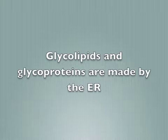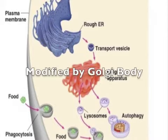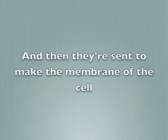Glycolipids and glycoproteins are made by the ER, then modified by the Golgi body, and they are incorporated into the membrane of the cell.